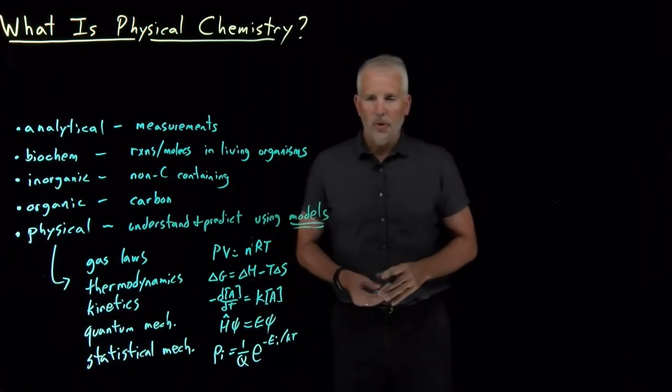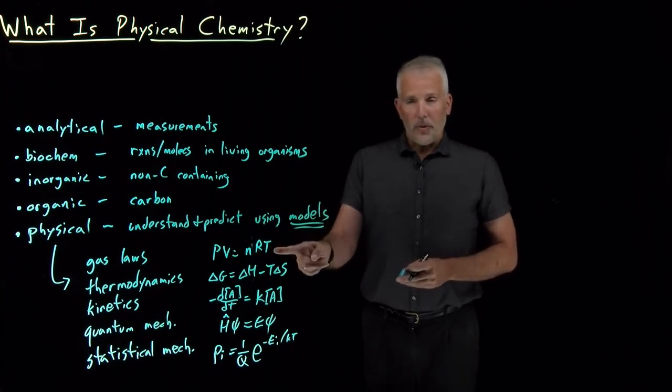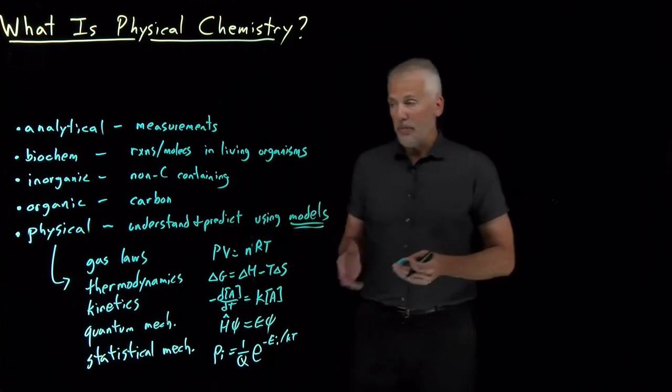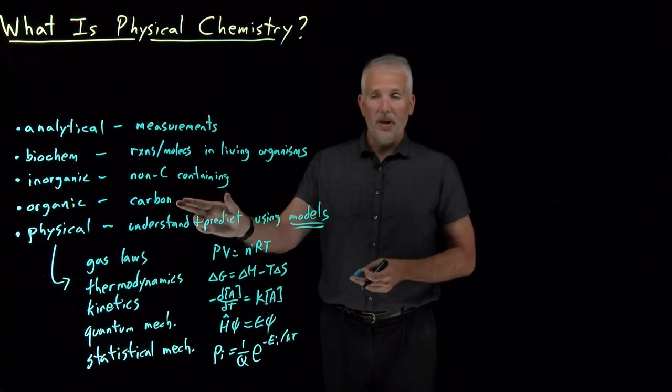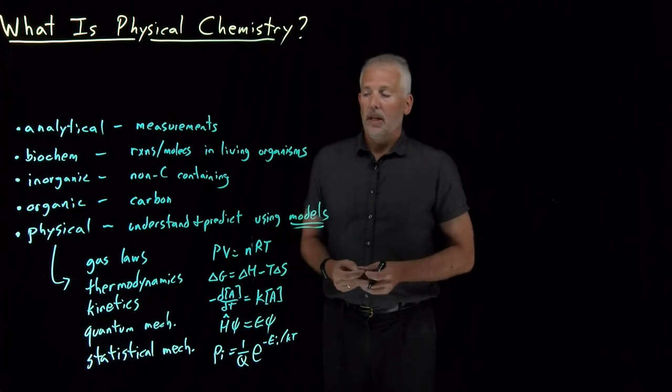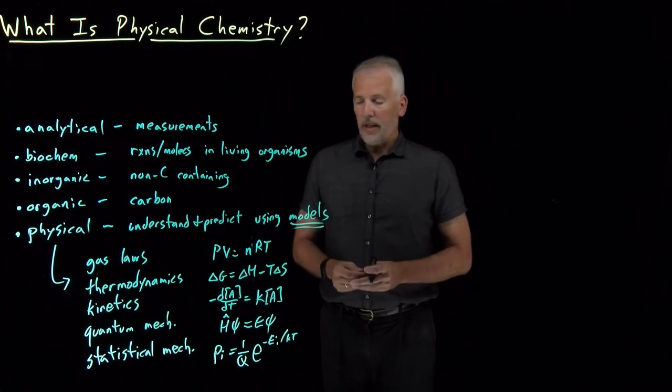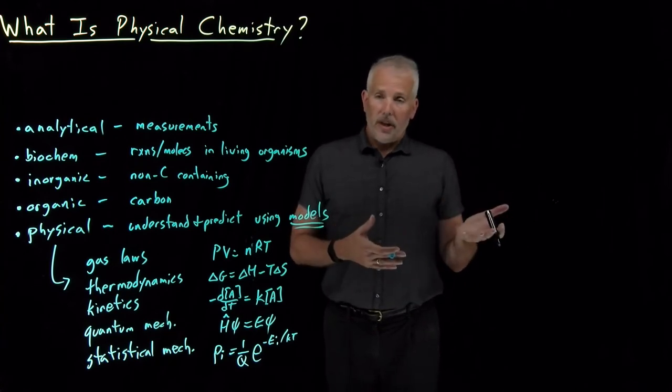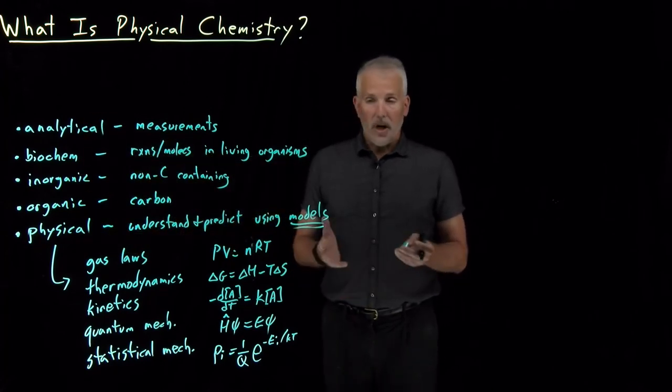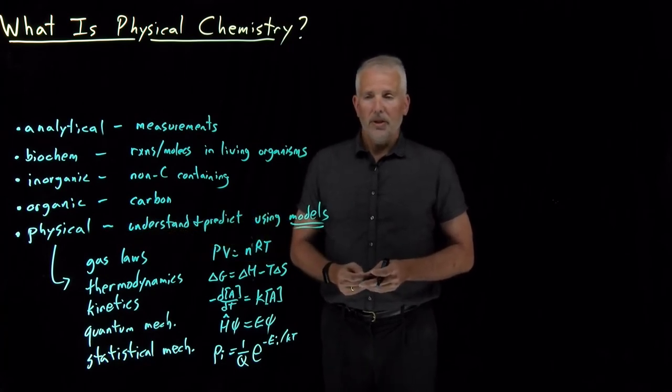We use models to try to understand physical systems and chemical systems. We like to understand and predict how chemical systems behave using models. The keyword here is models. Over and over in physical chemistry, we'll introduce some model for how the system behaves, often in the form of an equation, and then we'll see what that model tells us about how a system behaves. Physical chemists are agnostic. We don't care about whether we're making predictions about a carbon-containing molecule or a non-carbon-containing molecule or a biomolecule. We're happy if we can understand and predict how things work using our models.